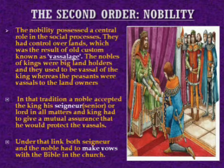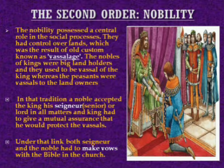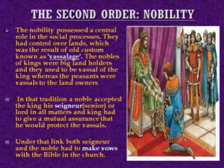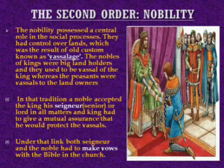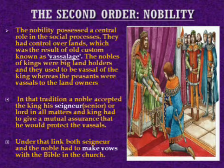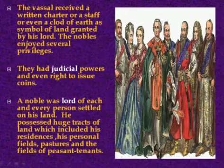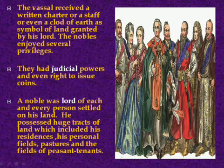Thus, a noble accepted the king as his senior or lord in all matters, and the king had to give a mutual assurance that he would protect the vassals. As we know, the medieval period was one of chaos, war, and conflicts everywhere, creating a feeling of terror and a desire for protection. Thus emerged the feudal system and vassalage. Under this bond, the lord and the noble had to make vows with the Bible in the church, and the vassal received a written charter, a staff, or even a clod of earth as a symbol of land granted by his lord.